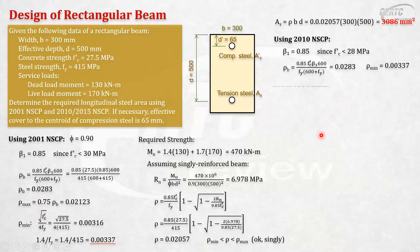The required strength, same, 1.2 dead load plus 1.6 live load. So, that's 428. The same procedure. Let's assume this is singly reinforced. Your phi is 0.9, and assuming this is tension controlled. Not just yield. Tension controlled. It yields, but it should be tension controlled.